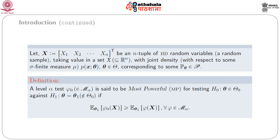Next, we consider x vector equal to (x1, x2, ..., xn), where x1, x2, ..., xn is an n-tuple of iid random variables — that means it is a random sample from a certain distribution p(x; theta), where theta belongs to Theta, and p(x; theta) is generated from capital P_theta which belongs to script P.